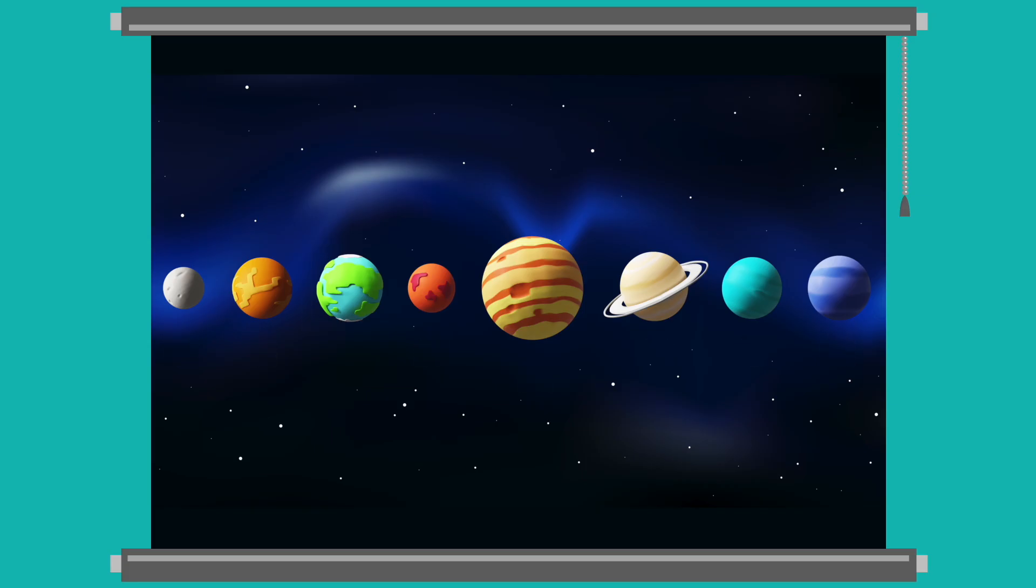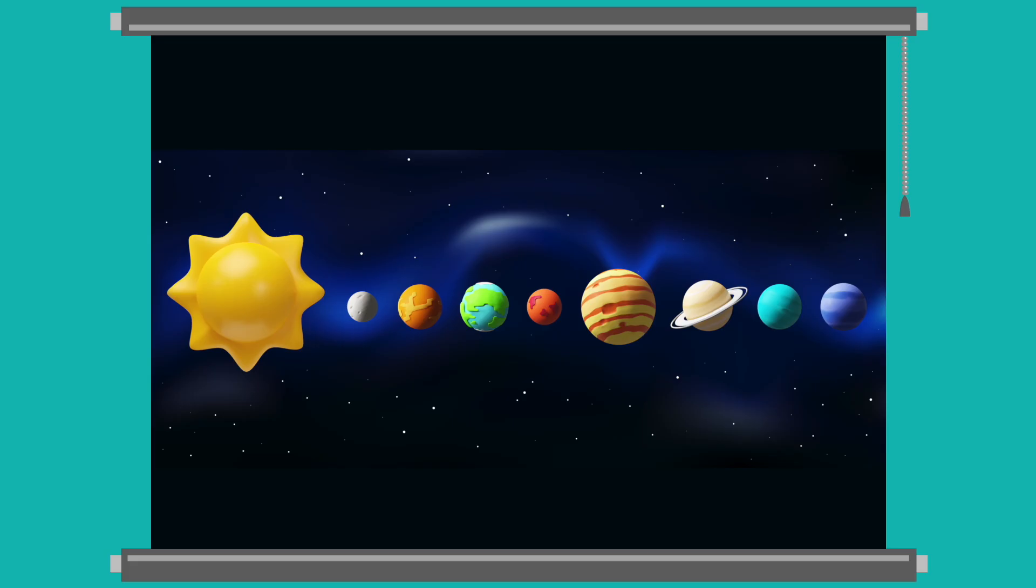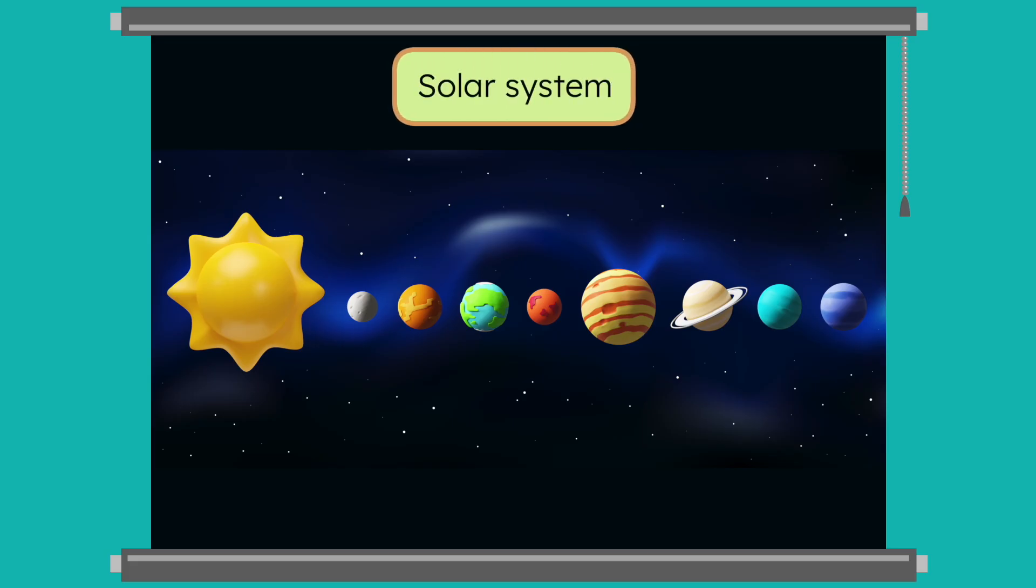And of course, the star of the show, the Sun. The Sun and these eight planets are all part of our solar system. The solar system is like a big neighborhood in outer space.